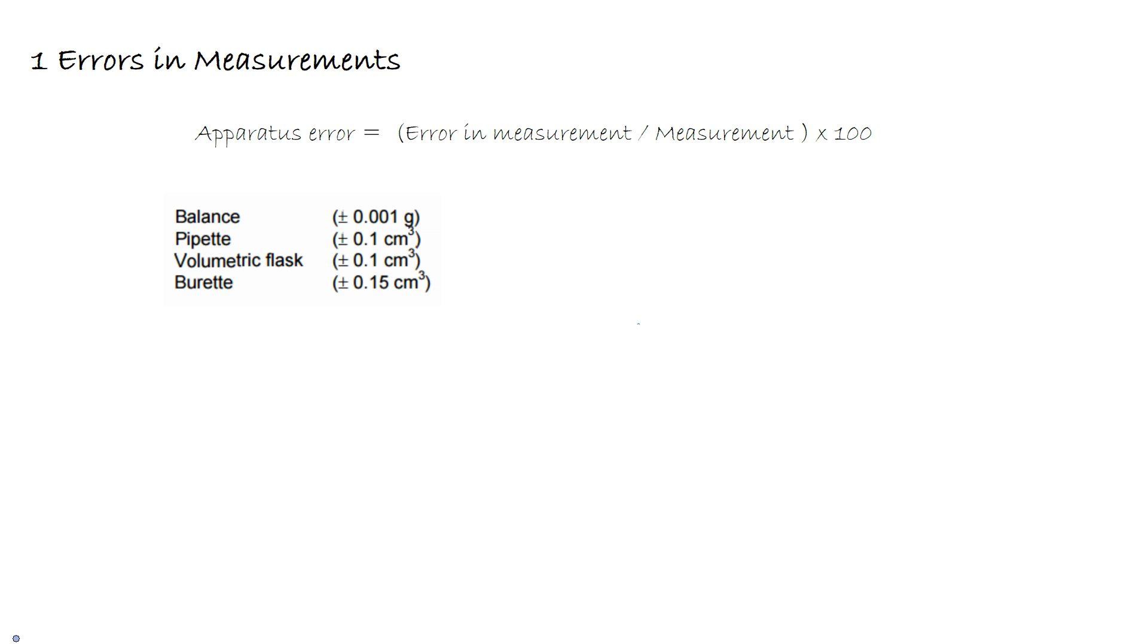To start with we're going to look at errors in measurements and first we'll look at apparatus error. The apparatus error is defined by the error in a measurement divided by the measurement itself times by 100.